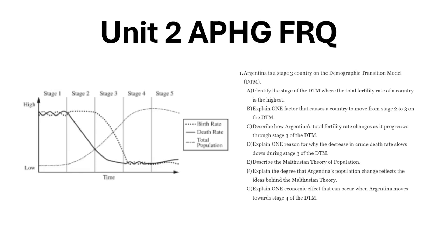It says here Argentina is in Stage 3 of the DTM, and we're given the DTM so we can see what Stage 3 looks like. The death rate continuously decreases — not as much as in Stage 2, but it continues to decrease as healthcare advances, medication is diffused, and sanitation becomes more widespread. The birth rate, however, starts to take its initial drop — exponentially — so the total population isn't going to decline but will increase at a much slower, more linear rate. This is what Thomas Malthus warned about in the Malthusian theory, though it didn't account for countries progressing into Stage 3, 4, or 5.